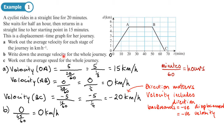This might seem counterintuitive — you might think, well, I've been moving so how can my velocity be zero? That's because velocity is based on displacement, and the displacement is zero. Speed is a different matter — average speed uses distance, not displacement. So because we're looking at displacement when calculating velocity, if displacement is zero, average velocity is zero.